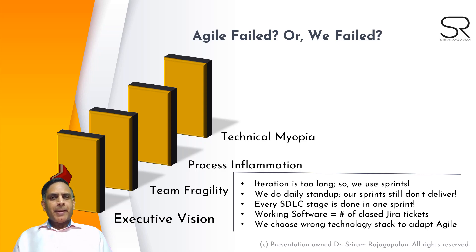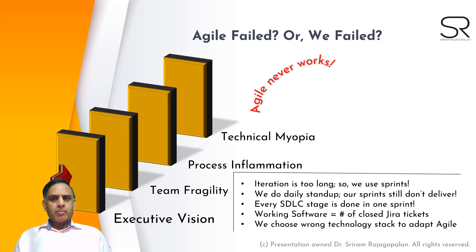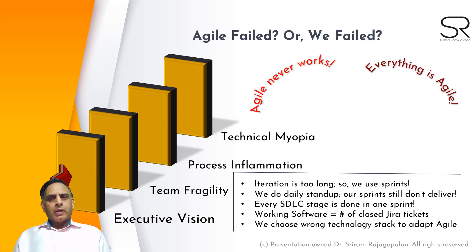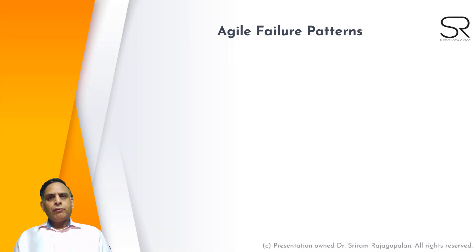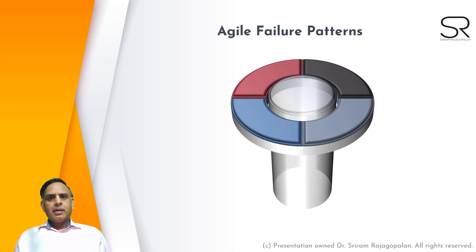These are some of the patterns that emerge. If you understand these reasons, on one end of the spectrum is 'agile never works,' and on the other end is 'everything is agile.' So what is really going on? If you look at the deep roots behind each and every one of those failure patterns, a few clear patterns emerge. At the top, you will see task-oriented and overburdened teams.